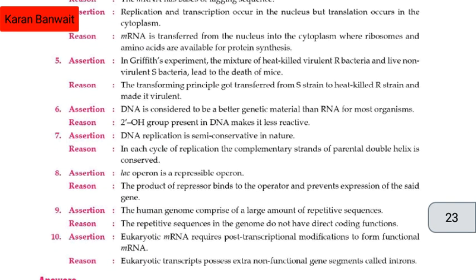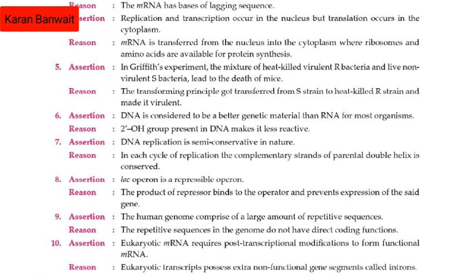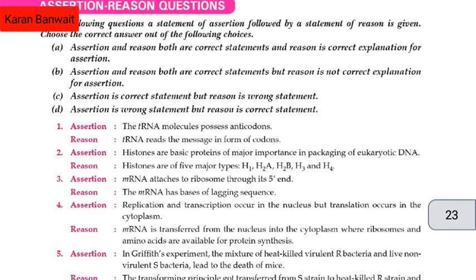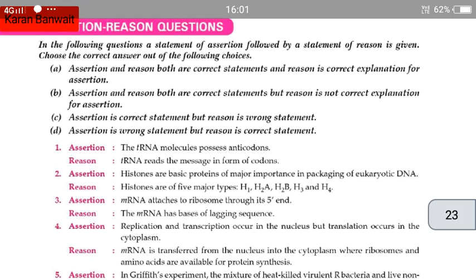Let us see the tenth assertion: eukaryotic mRNA requires post-transcriptional modifications to form functional mRNA. Reason: eukaryotic transcripts possess extra non-functional gene segments called introns. The correct answer will be A — assertion and reason both are correct statements and reason is the correct explanation for the assertion. That's it for today, hope you liked this video and we will meet you in the next one. Bye.